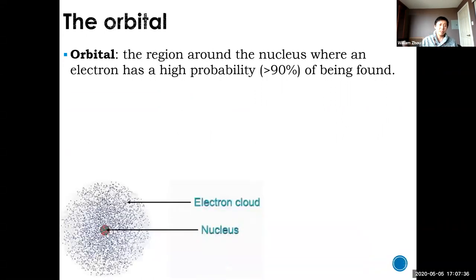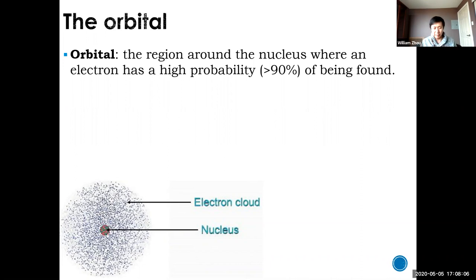That is the definition of an orbital: the region around the nucleus where you have the highest probability of finding an electron — by highest, I mean 90% or greater. An orbital is a region in space. We represent electrons using electron clouds around a nucleus. The dots you see don't literally mean that many electrons; they simply mean that in that dotted region, you have a 90% chance of finding that electron. Outside of that blob, you have a 10% chance.